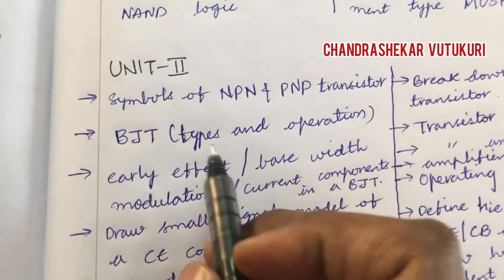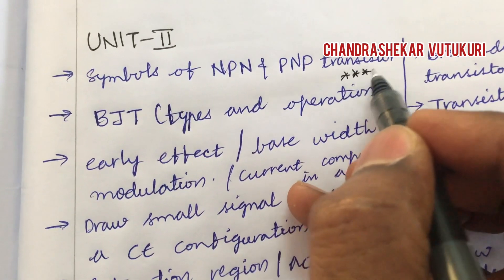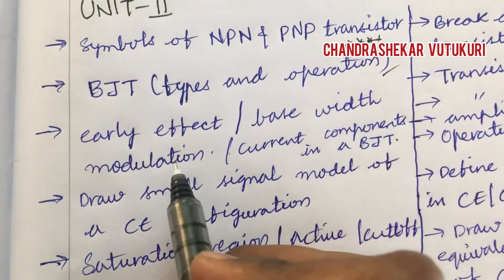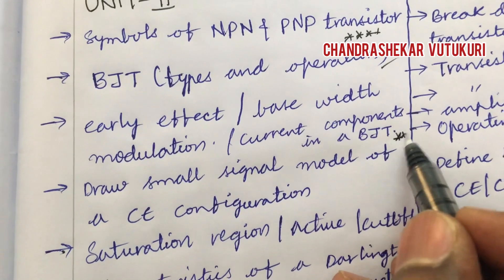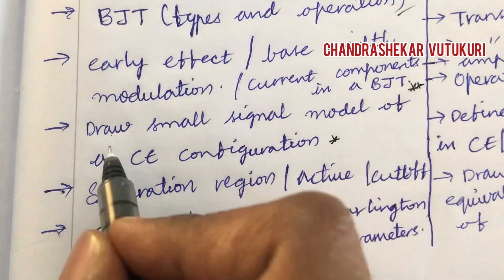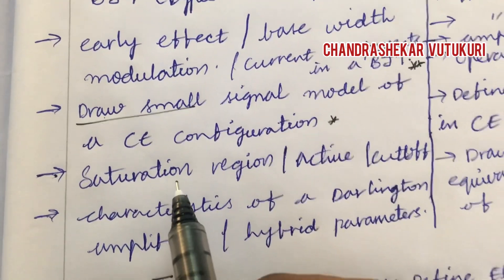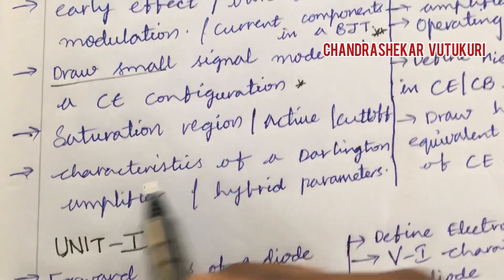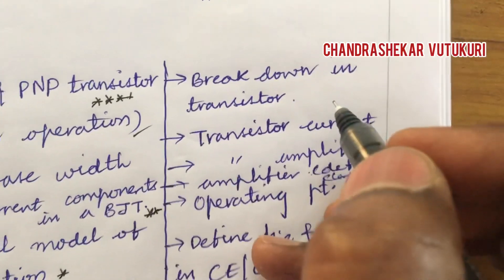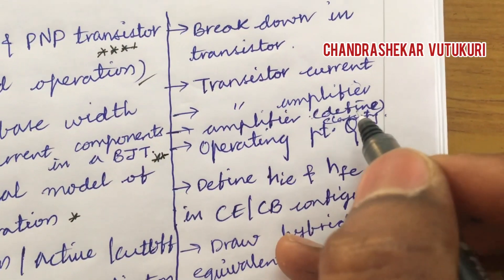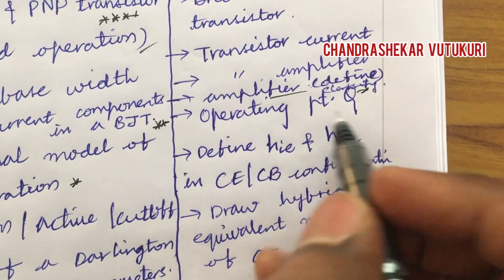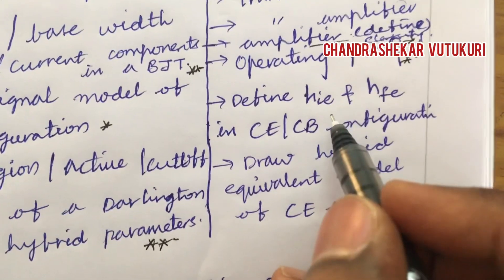Now for Unit 2: symbols of NPN and PNP transistors are a definite short question this time. BJT types and operations, Early effect, base width modulation, current components in a BJT — also top-most questions. Draw the small signal model of CE configuration. Define the terms: saturation region, active region, cutoff region. Characteristics of Darlington amplifier, hybrid parameters, breakdown in transistor, transistor current, transistor amplifier — define the term amplifier and classify them. Operating point Q is also a top-most question.